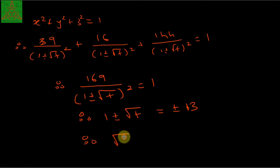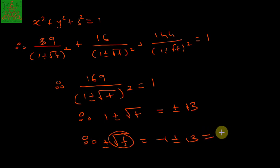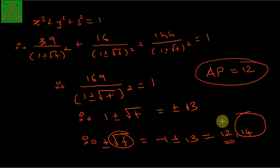So √f = −1 ± 13, giving two values. Since √f is a distance it cannot be negative, so we take only the positive values: 12 and 14. Therefore the minimum distance from the point (3, 4, 12) to the sphere is 12 and the maximum distance is 14.